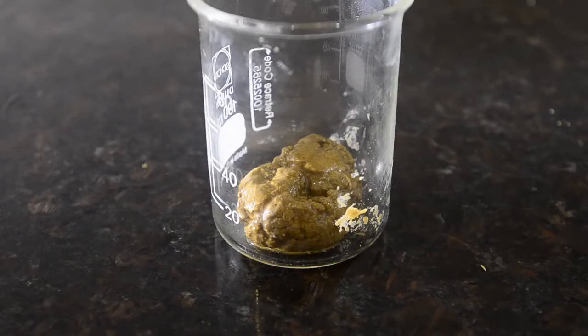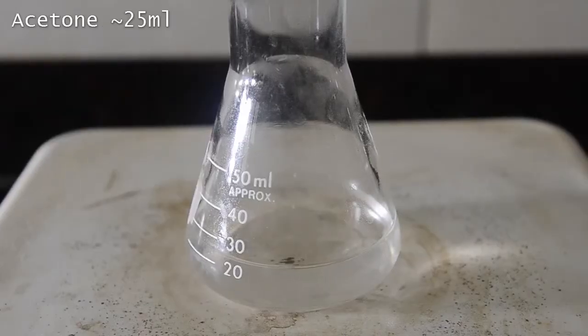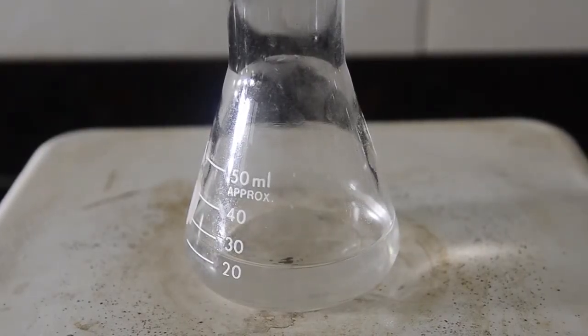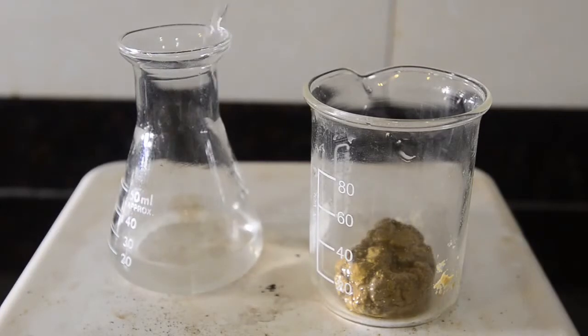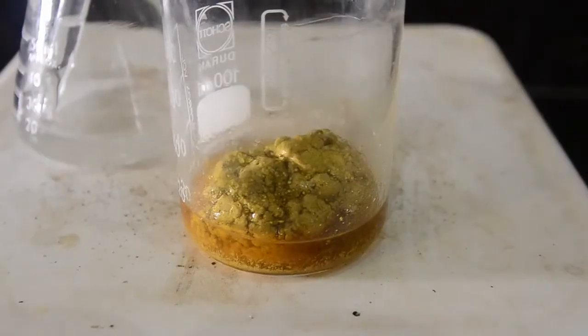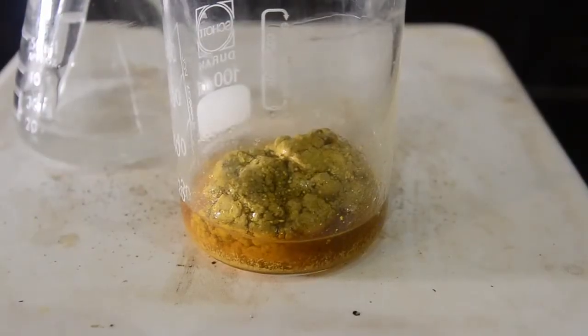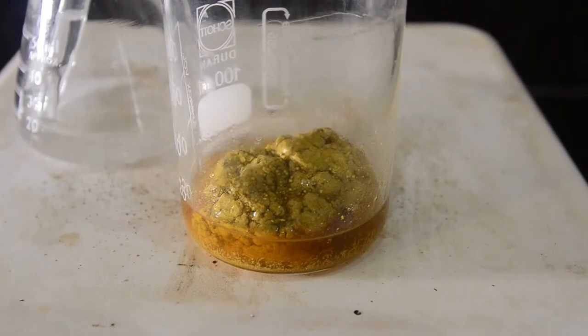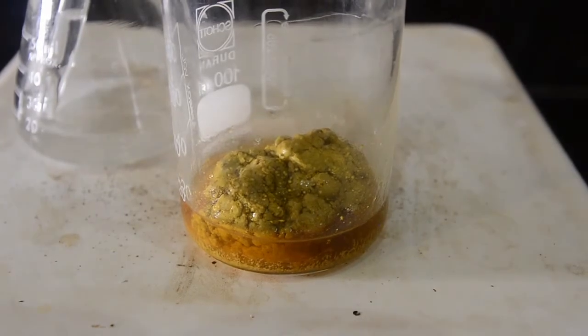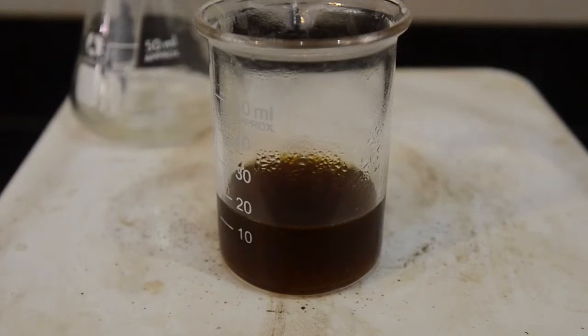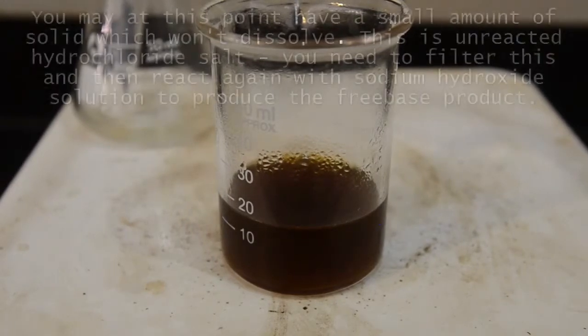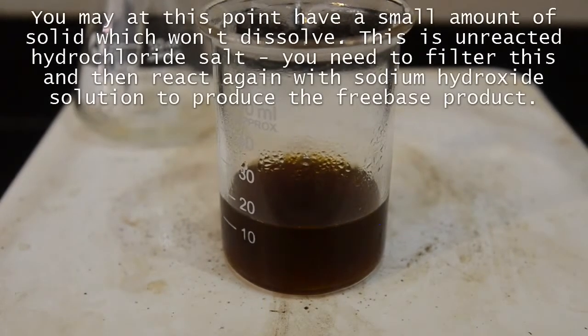Now we'll purify further by converting this back to the hydrochloride salt. Prepare a small amount of hot acetone. And on a hot plate, add acetone to the product until nothing more dissolves. This will take between 10 and 15 mls. You may still have a yellow precipitate at this point that won't dissolve. If so then you will need to filter this and re-react with sodium hydroxide as this is unreacted hydrochloride salt.